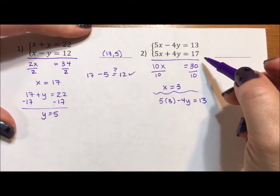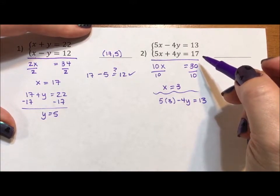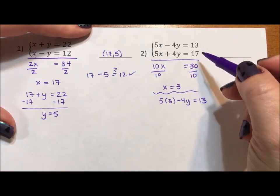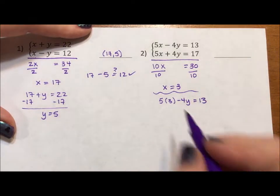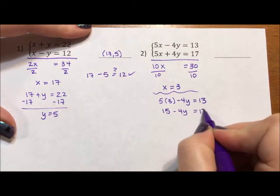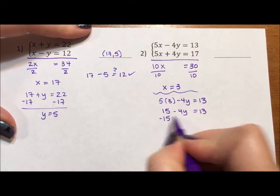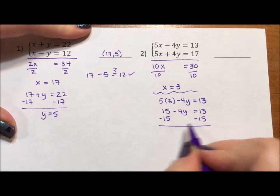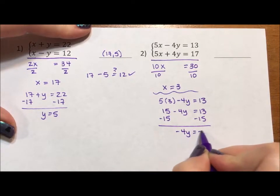So 15 minus 4y is equal to 13. I'm going to subtract 15 from both sides so that negative 4y is equal to negative 2.